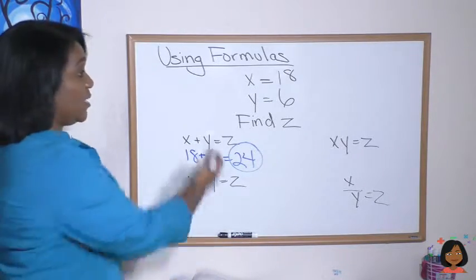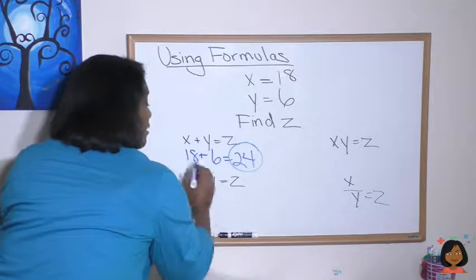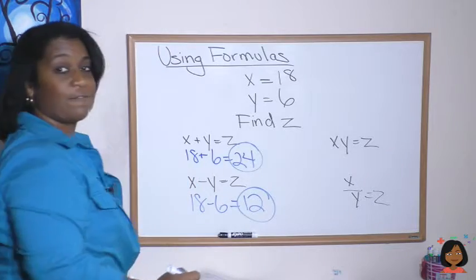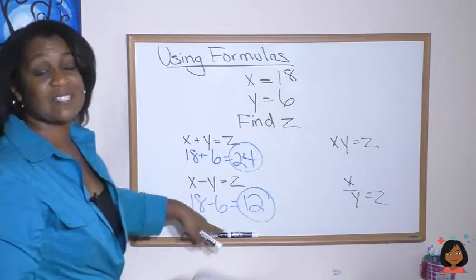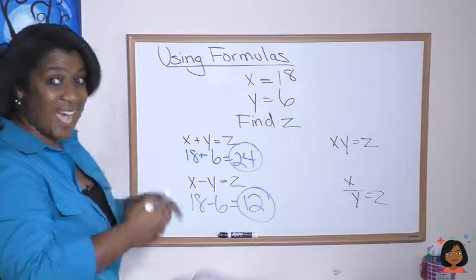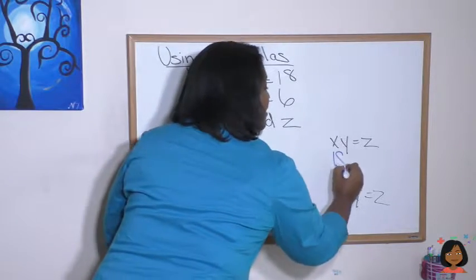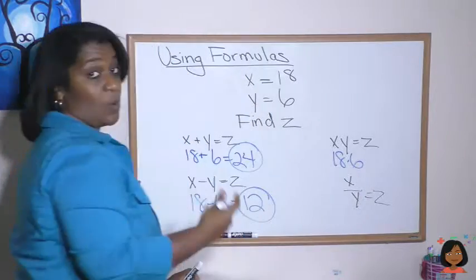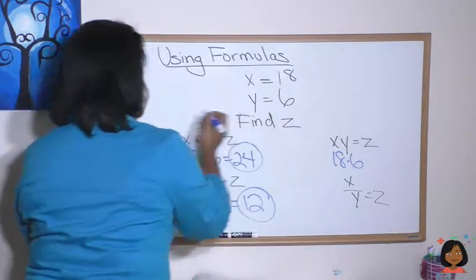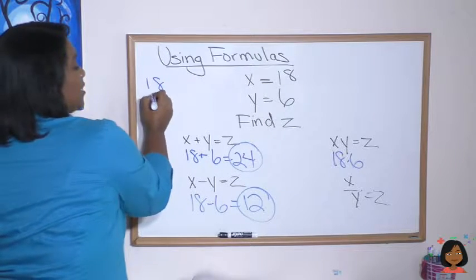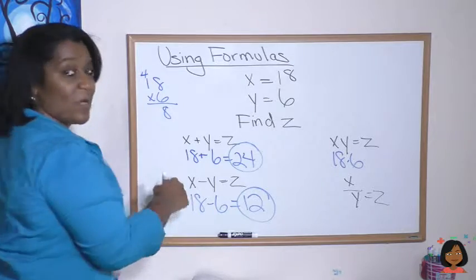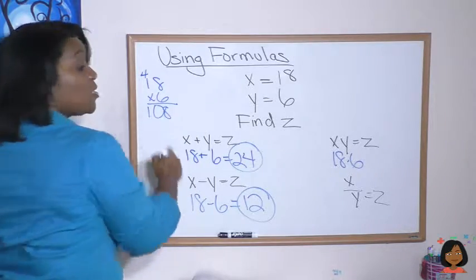Different formula gives us a different answer. How about this one, x times y equals z. Well it's 18 times 6. I don't know that in my head so I'm gonna do it off to the side. Let's do it right here. 18 times 6, 8 times 6 is 48, 6 times 1 is 6 and 4 is 10, so 108 is our answer.